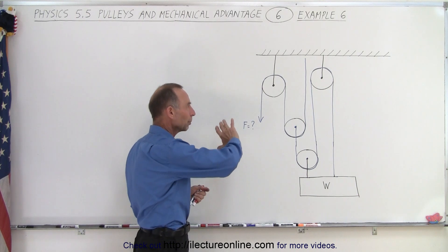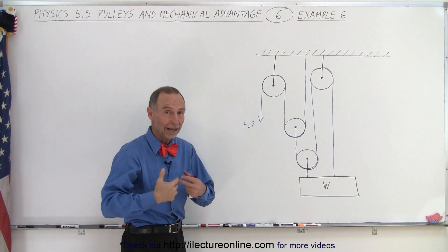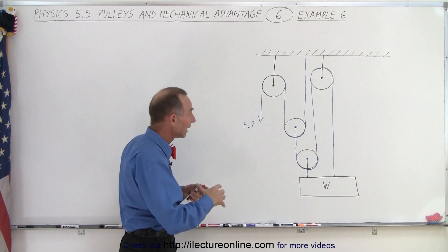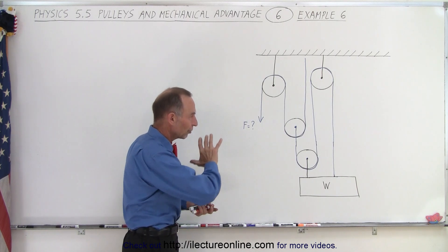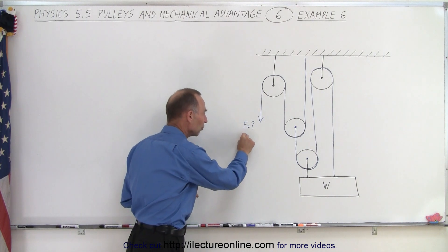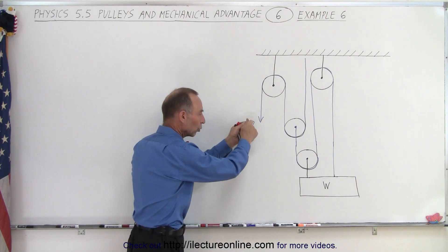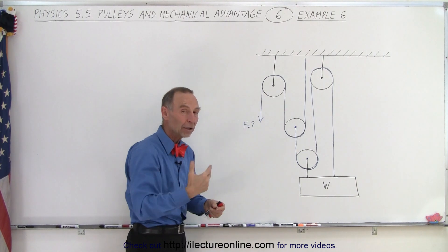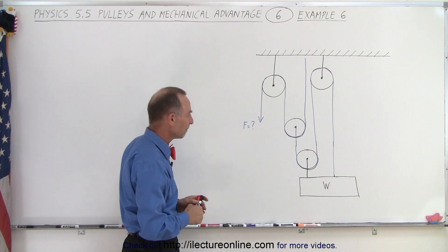First of all, we must assume that all the pulleys have no mass, meaning they don't have a moment of inertia, and they don't have any friction. So it's an ideal situation. We need to find out how much force is required to hold everything in place, or to pull this object up at a constant speed. The force will be the same in either way.